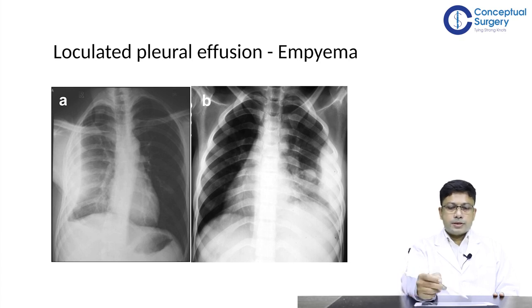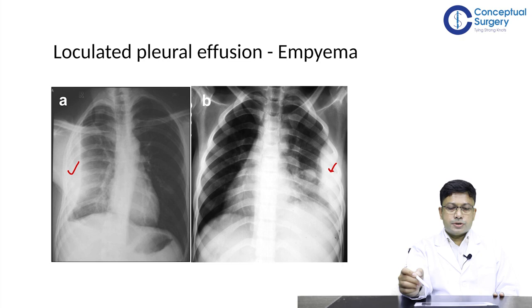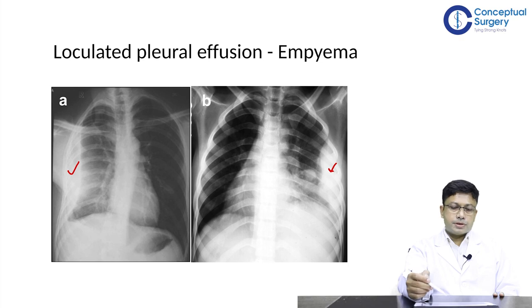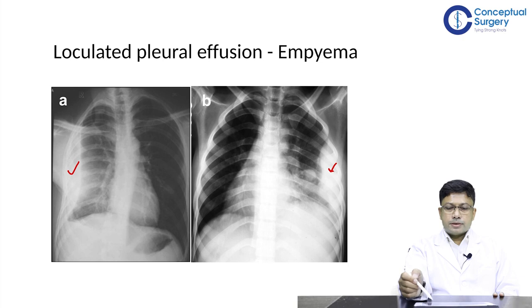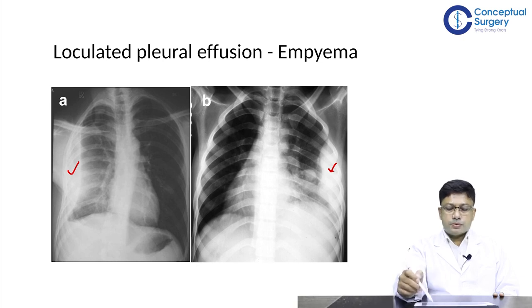These are two x-rays of different patients showing loculated pleural effusions by the side of the chest wall. This kind of picture is usually seen in loculated pleural collections or empyemathorax, which can be drained by putting a catheter under ultrasound guidance. This is a situation where one should always undertake ultrasound evaluation for proper site marking before inserting a chest tube.